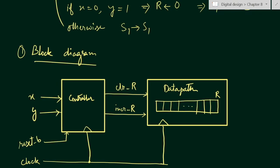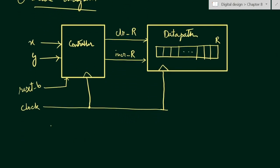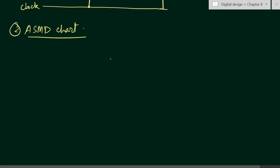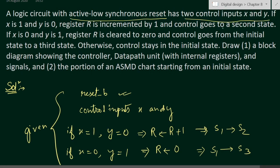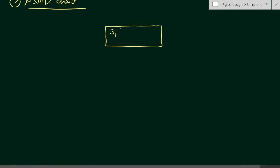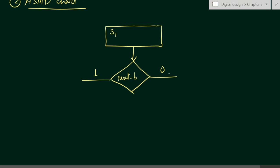Now let us draw the ASMD chart. The initial state is s1. The ASMD chart has an active low synchronous reset, so we draw a decision box for reset_b. When reset_b equals 0 (active low), control remains in state s1. When reset_b is 1, we check the control signals.